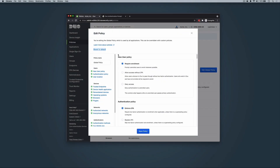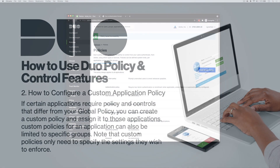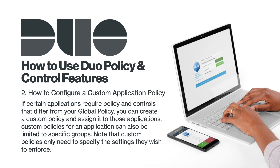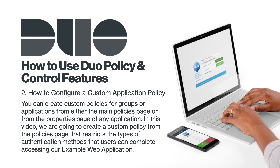Then click Save Policy to apply the global policy default settings. How to configure a custom application policy. If certain applications require policy and controls that differ from your global policy, you can create a custom policy and assign it to those applications. Custom policies for an application can also be limited to specific groups. Note that custom policies need only to specify the settings they wish to enforce. You can create custom policies for groups or applications from either the main policies page or from the policies page in any application.